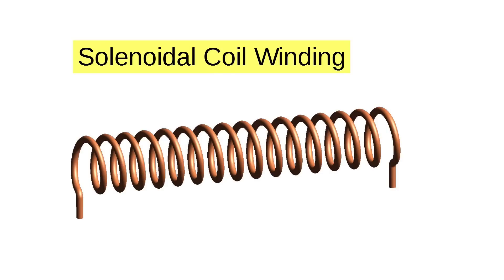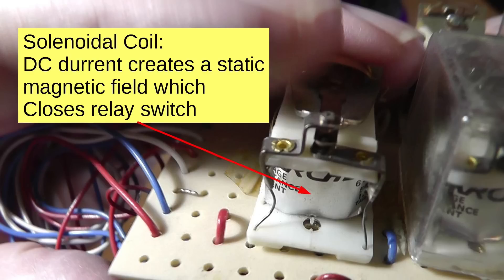Here we see a coil wound in a solenoidal fashion, meaning the coil is straight. Note that this coil has only air inside. You can find many coils like this in older radios, and occasionally in newer devices such as some antenna tuners. Note that this is not a transformer, but rather just a coil. If you put something inside the coil with magnetic properties, like a piece of iron, the inductance of the coil will go up. The device on the board shown here is a relay — a single solenoidal coil of wire. When DC is applied, it creates a static DC magnetic field. The relay contacts are made of steel or other inductive material; the DC field will pull the relay contacts down, enabling a small current to control a much larger one.